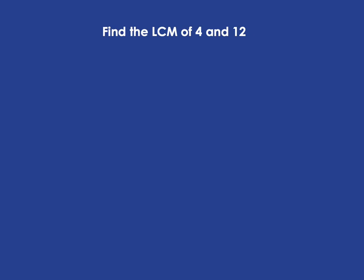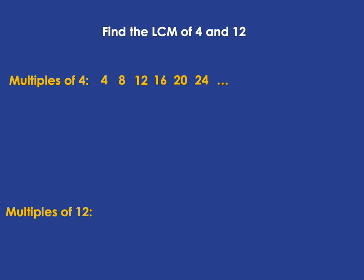If you're asked to find the lowest common multiple of four and twelve, we'll do it the same way. Write out a few multiples of four, then start writing the multiples of twelve, checking each time whether they're already in the list of multiples of four. The first multiple of twelve is 12 times 1, which is 12, and that's already there — so the lowest common multiple of 4 and 12 is 12.